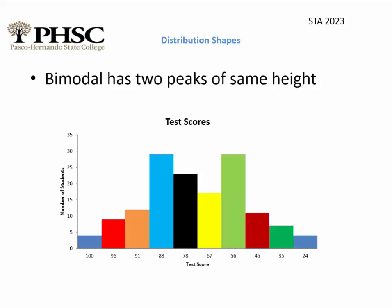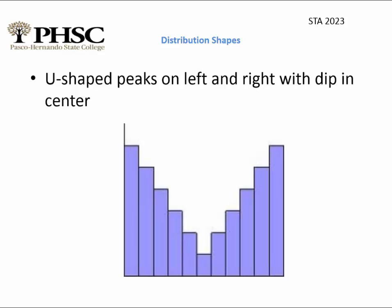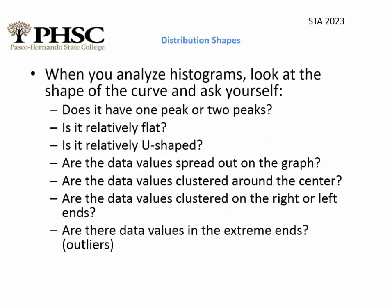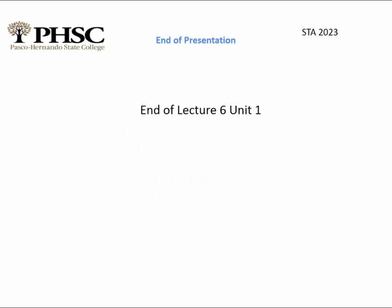We can also identify the mode of a data set by graphing it. A bimodal distribution has two peaks of equal height, while a U-shaped distribution dips in the center. When analyzing histograms, ask: does it have one or two peaks? Is it flat or U-shaped? Are values clustered or spread out, and are there any outliers? That concludes lecture 6, unit 1.